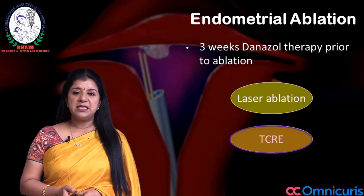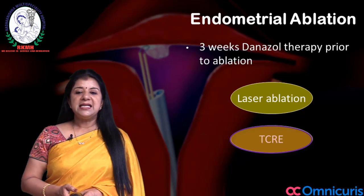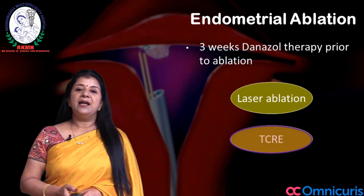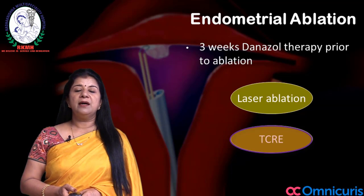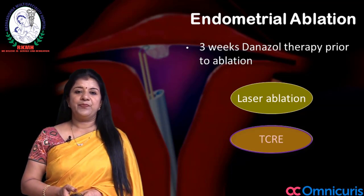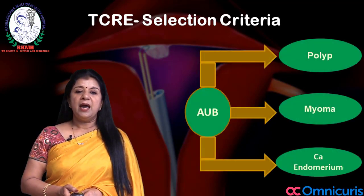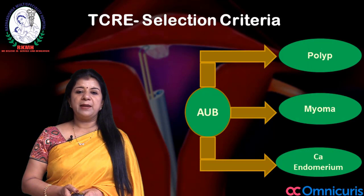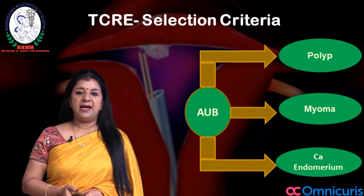TCE is one of the best modes of treatment and ablation of the endometrium. TCE can be done with roller ball loop or with the loop kind of resection of the endometrium. TCE selection criteria: there has to be abnormal uterine bleeding, and if it is a polyp, myoma, or carcinoma of the uterus, this should not be taken for TCE.